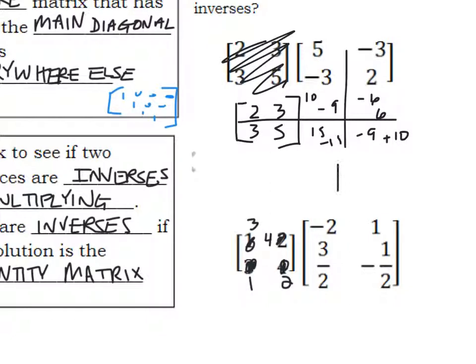Which means once I combine those, I'm going to get a matrix of 1, 0, 0, 1. So yes, these are inverses of each other. Because I got my ones going on the diagonal from top left to bottom right, and then I have zeros in the other spots.